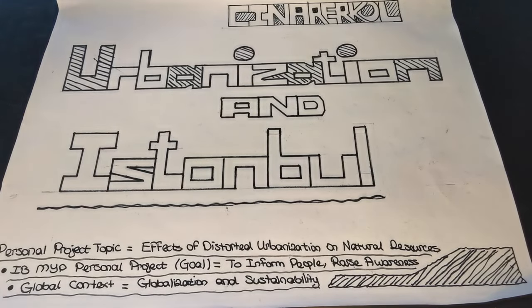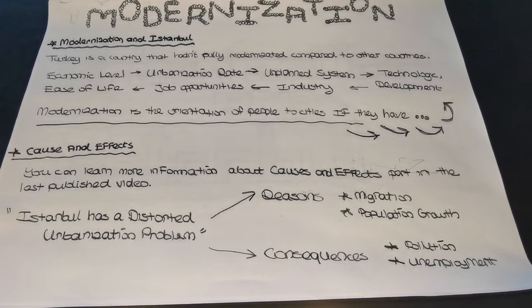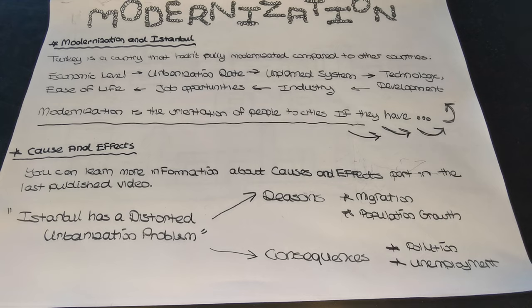Let's talk about modernization. What is modernization in Istanbul, and what are its causes and effects? During the research part of my personal project I found an online document titled 'Modernization, Urbanization and Turkey.' Istanbul is a city that modernizes with technology, industrialization, and economic and political developments. It is also preferred by a large community because it is a modern, developed city. One of the biggest reasons for distorted urbanization is modernization, because modernization orients people to cities that have advanced technology, ease of life, and job opportunities, which naturally causes population growth.